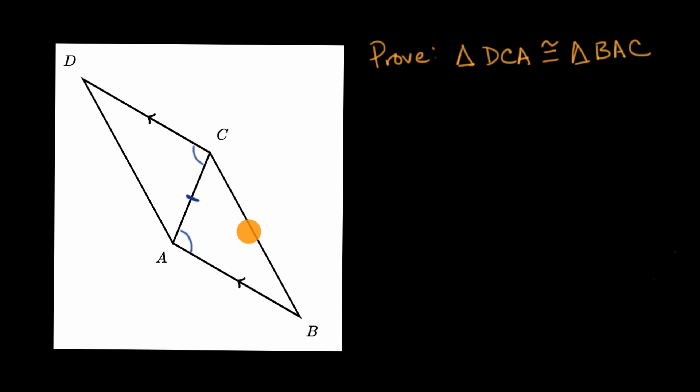Let me ask you a slightly different question. Let's say that we did give you a little bit more information. Let's say we told you that the measure of this angle right over here is 31 degrees, and the measure of this angle right over here is 31 degrees. Can you now prove that triangle DCA is congruent to triangle BAC?